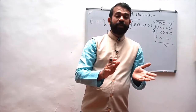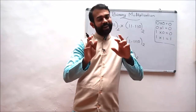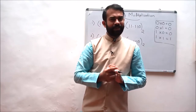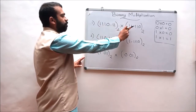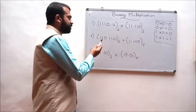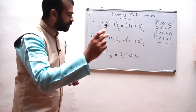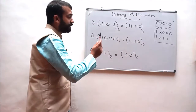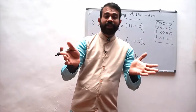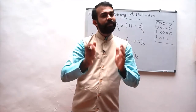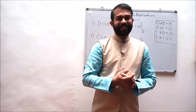This is how we perform the multiplication of floating-point binary numbers. Hope you have understood this topic. Kindly go through these assignment questions. Question 1: multiply 1110.11 with 11.110. Question 2: multiply 110.1101 with 1.1110. Question 3: multiply 1.01 with 0.01. In the upcoming lecture, we will perform 1's complement and 2's complement operations on binary numbers. See you soon — goodbye, thank you, and all the best.